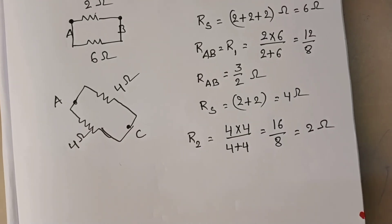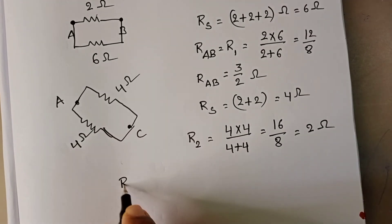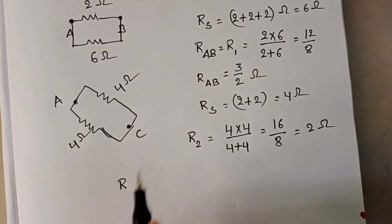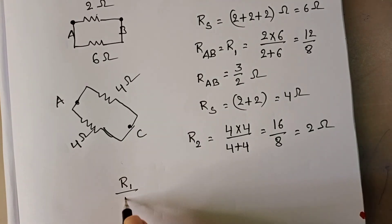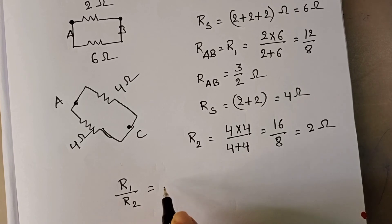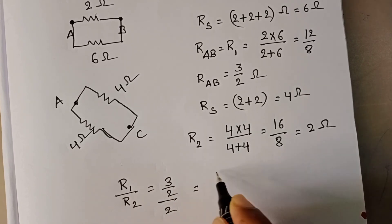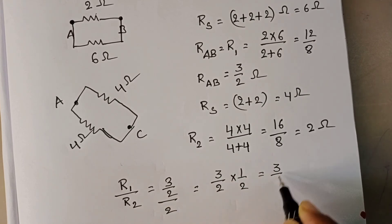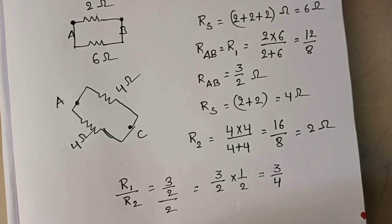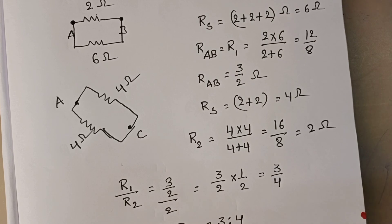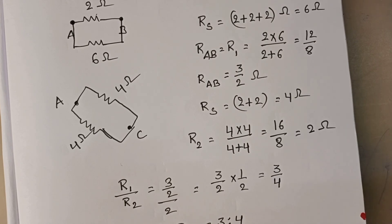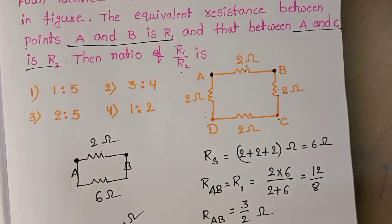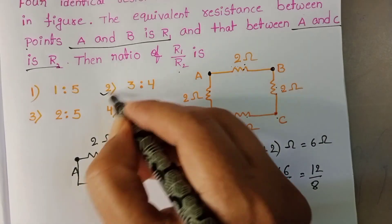Finally, the ratio R1 by R2 equals (3/2) divided by 2, which equals 3 by 2 into 1 by 2, equals 3 by 4. So R1 to R2 equals 3 to 4. Checking the given options, the second option is the correct answer.